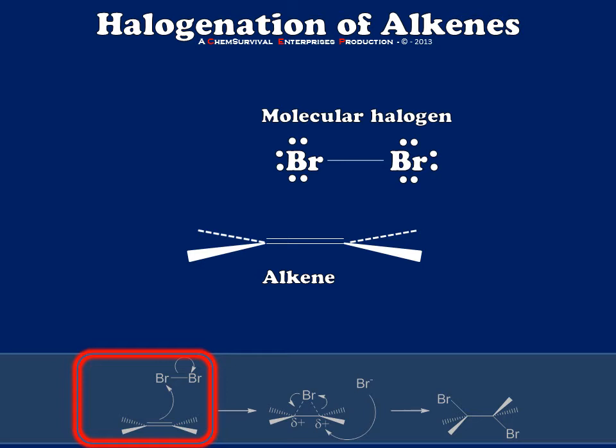I'm going to halogenate my alkene using molecular bromine. You may immediately stop and say, wait a second Davis — you're telling me that the pi electrons from an alkene are going to attack a molecule that's non-polar? It doesn't even have a dipole. How could it have an electrophilic site? And you'd be correct. But it's going to attack because the bromine atoms are very large. They have big electron clouds that are very polarizable, very squishy, and easily pushed around. So we can induce a dipole by attacking it with the alkene. That's exactly what's going to happen.